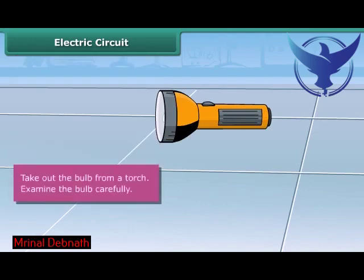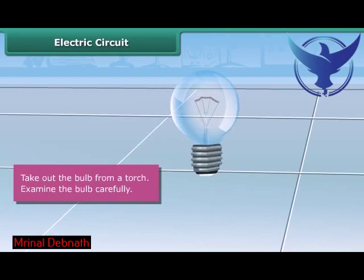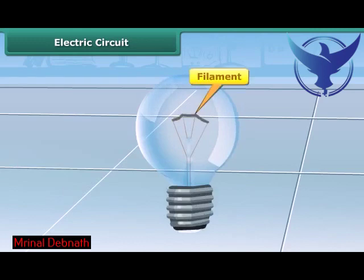Step 1: Take out the bulb from a torch. You can see that the bulb is a small globe of thin glass inside which a coiled filament is fixed on two thick wires. One of these thick wires is connected to the metal case around the base of the bulb.